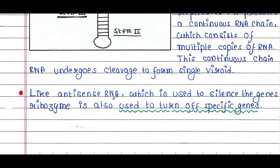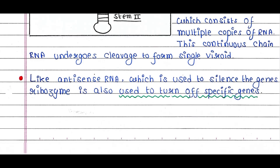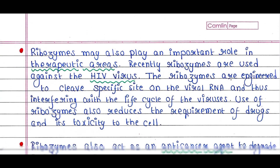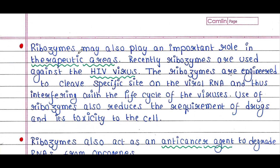Like antisense RNA which is used to silence genes, ribozymes are also used to turn off specific genes. Ribozymes may also play an important role in therapeutic areas. Recently, ribozymes have been used against the HIV virus.